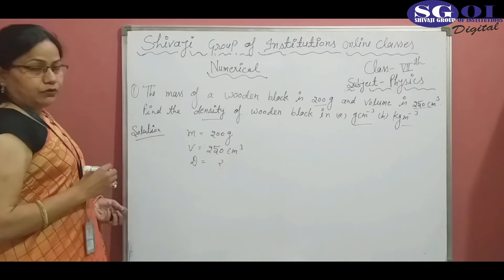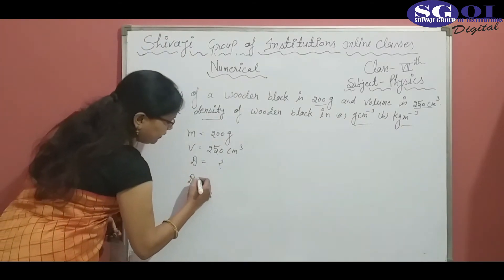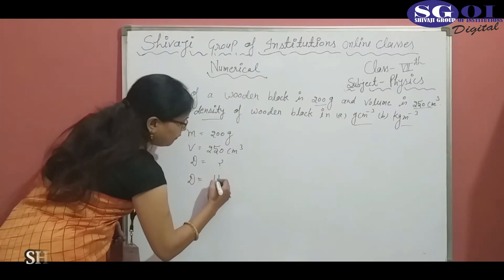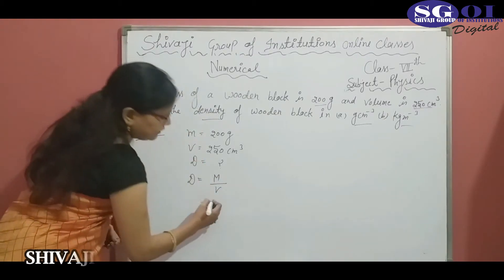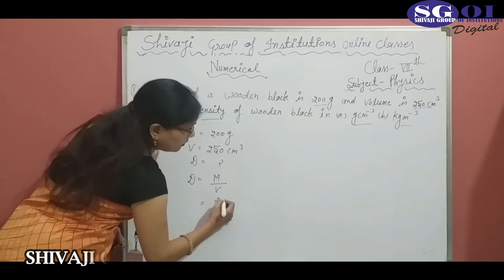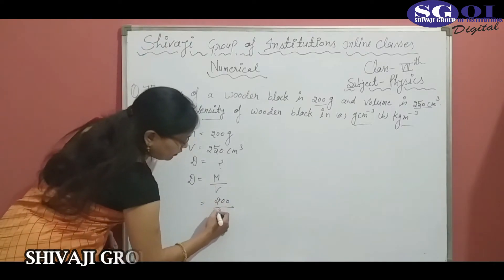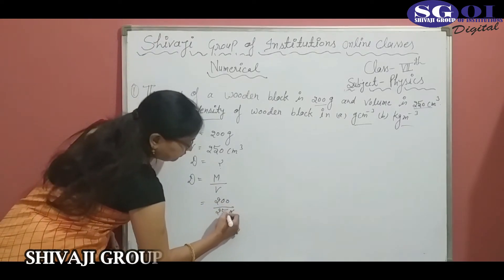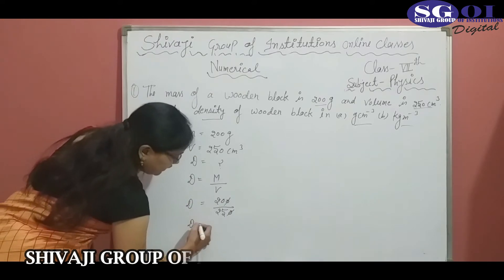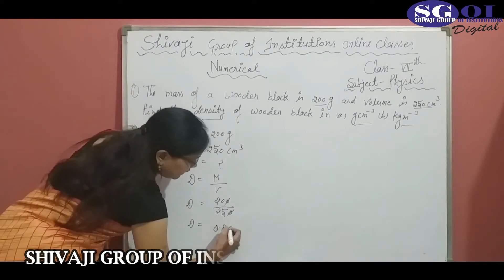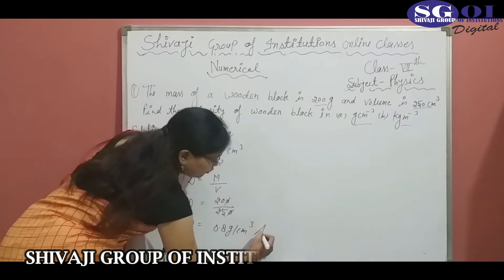As we know that the formula of density is equal to mass divided by volume. Here, mass is 200 and volume is 250. After dividing, we get 0.8 gram per cm³.